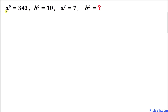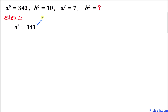Let's focus on this very first equation: a power b equals 343. Let's look at this number 343. 343 is the same as 7 times 7 times 7, which is the same as 7 power 3.